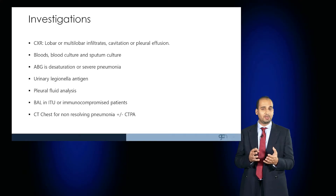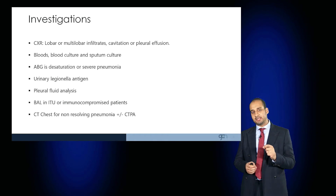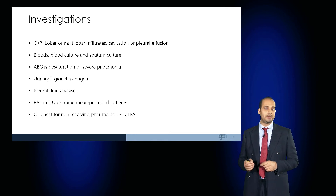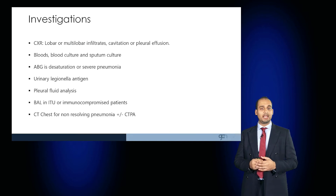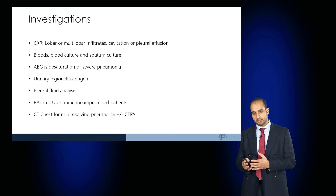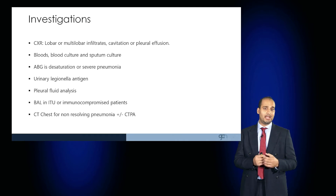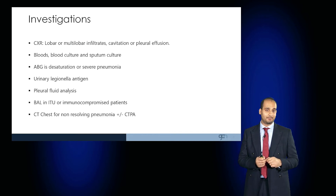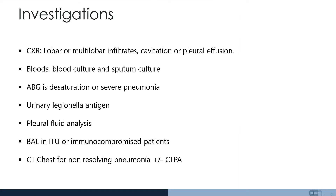Cultures would help determine which organism is causing septicaemia. It is very important to send the sputum for microscopy, culture and sensitivities. An arterial blood gas is important in patients who are desaturating to determine whether or not they are in type 1 respiratory failure. If there are signs, symptoms or a history suggestive of an atypical pneumonia, a urine Legionella antigen screen is important. And if there is pleural fluid noted on the chest radiograph, then that pleural fluid should be sent for analysis.